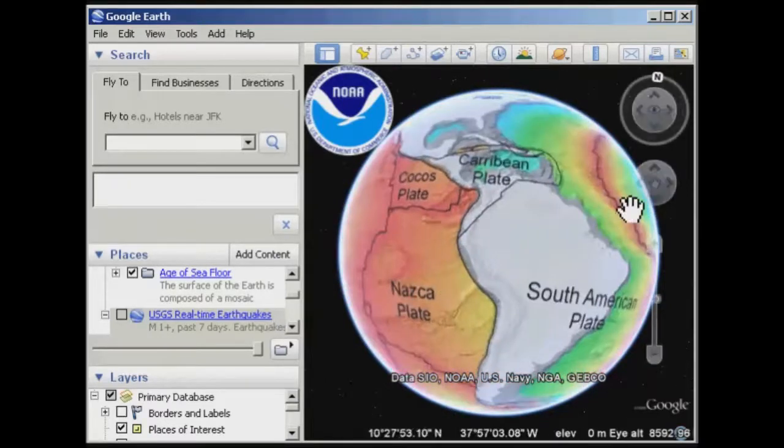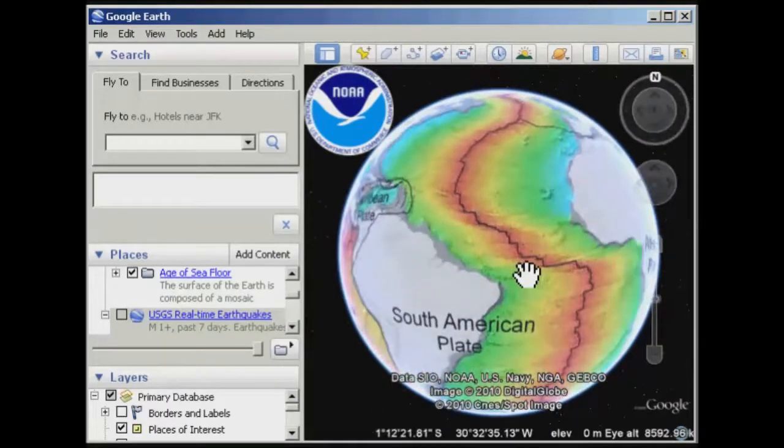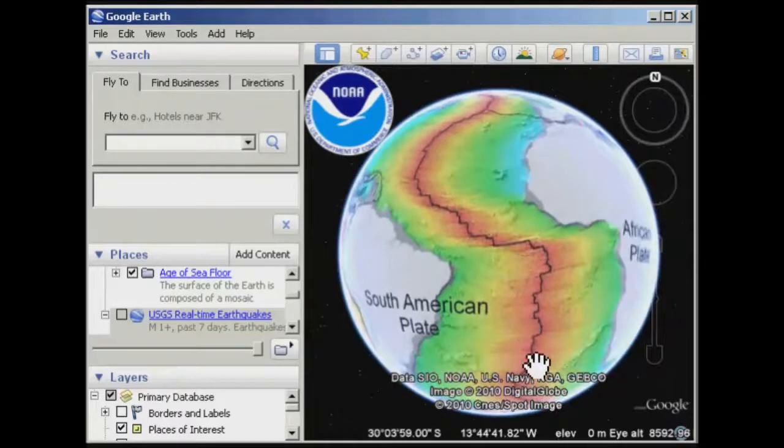Now what this is actually showing, although there's no legend here to tell you this, is that these red areas here are younger. This is basically where new sea floor is created along the mid-ocean ridges. We cover this a little bit more in the lectures in week two.